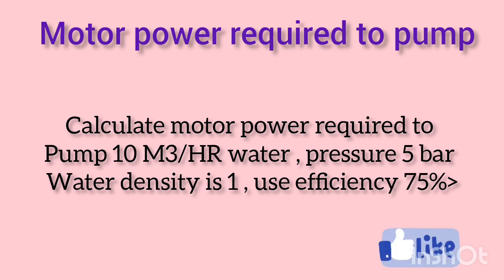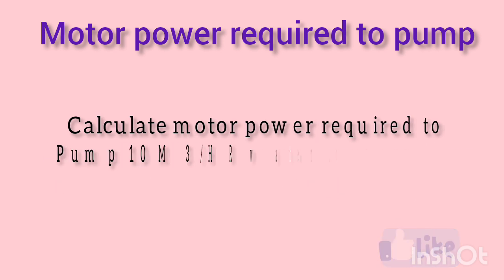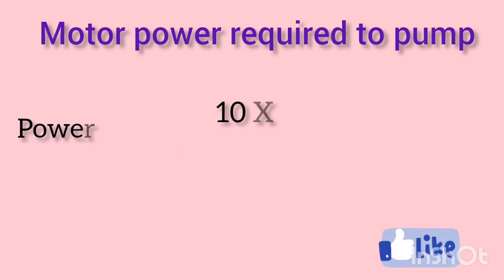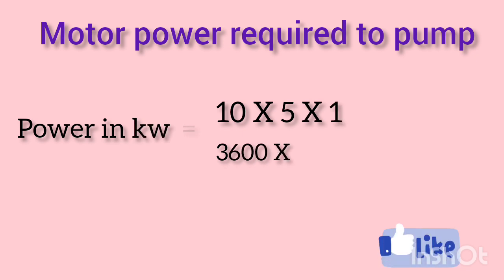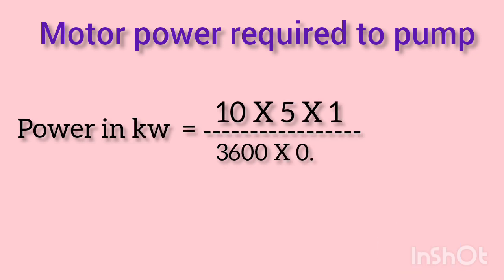Using the formula we just discussed, we can calculate the power required. Power required (kW) = (10 × 5 × 1) / (3600 × 0.75) = 0.444 kilowatts. So with these inputs, we would need a pump with a power output of at least 0.444 kilowatts to pump the water at the desired flow rate and pressure.